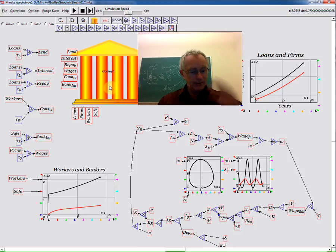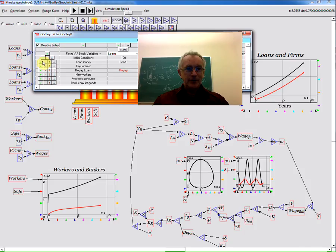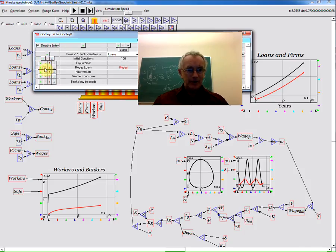So what I'm going to do, very simple way of doing it, but let's give it a try, is bring up the godly table and get rid of the mechanical borrowing of money by the firm sector and mechanical repayment and replace them with investment.